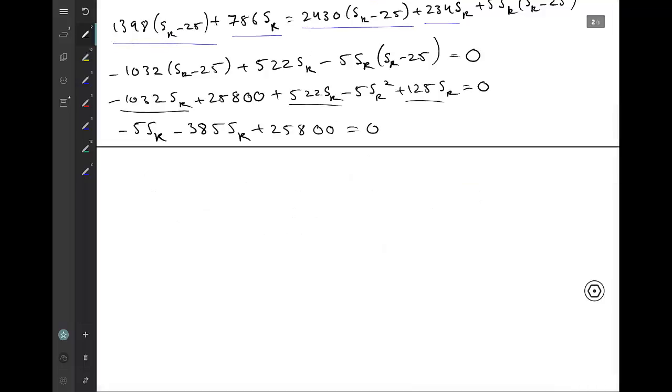At this stage we can go ahead and divide by negative 5 to get SR squared on its own. So SR squared plus 77 SR minus 5160 equals 0.